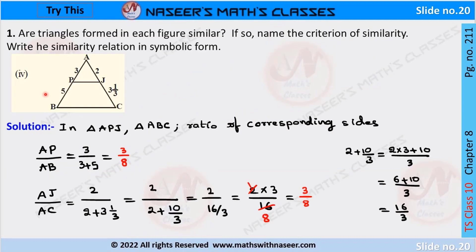Fourth bit: we have to check whether triangle ABC is similar to triangle APJ. First we find the ratio of the corresponding sides. AP by AB is written as 3 by (3 plus 5), equal to 3 by 8. The other corresponding side ratio AJ by AC is written as 2 by (2 plus 10/3). The denominator 2 plus 10 by 3 is written as 16 by 3. So this is written as 2 multiplied by 3 by 16. Cancelling, we get 3 by 8. The ratio of corresponding sides AP by AB equals AJ by AC, both equal to 3 by 8.